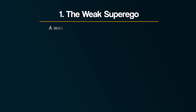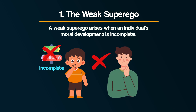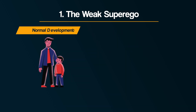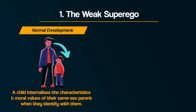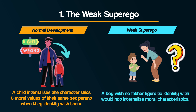Number one: the weak superego. A weak superego arises when an individual's moral development is incomplete. This typically occurs due to poor parental relationships during childhood, where the child fails to internalise the moral standards of their parents. According to psychodynamic theory, a child internalises the characteristics and moral values of their same-sex parent when they identify with them during the phallic stage. However, if a boy is raised by a single mother, the boy has no father figure to identify with, and so would not internalise a set of moral characteristics, and so would have a weak superego.